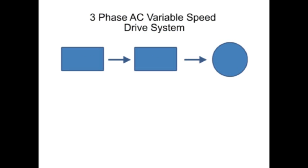This block diagram illustration depicts a typical three-phase AC variable speed drive system. It has three main components: an operator control, a drive controller, and an AC motor.